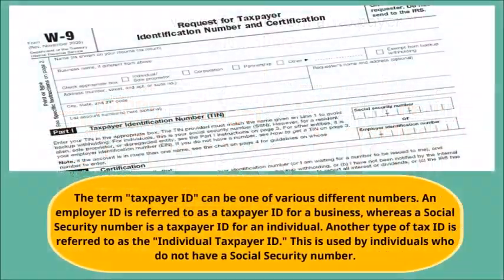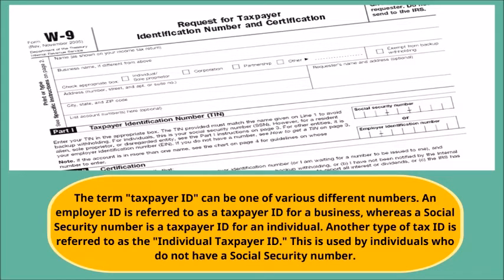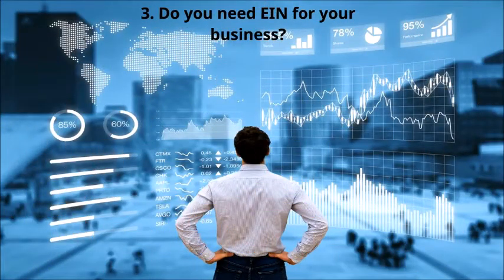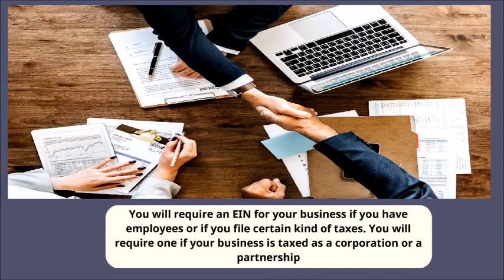A business tax ID serves the same purposes as a social security number does for individuals. How is an EIN different from a taxpayer ID number? The term taxpayer ID can refer to various different numbers. An employer ID is referred to as a taxpayer ID for a business, whereas a social security number is a taxpayer ID for an individual. Another type of tax ID is the individual taxpayer ID, used by individuals who do not have a social security number.